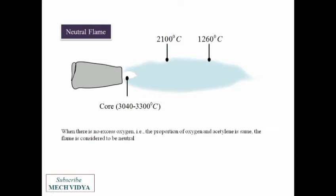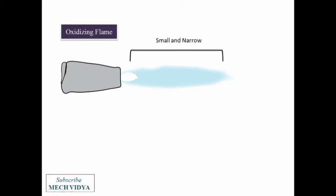Next, if the percentage of oxygen is more than acetylene, the flame becomes small and narrow. This type of flame is also called an oxidizing flame. These are harmful for welding of steels as the risk of oxidation is very high. These are mainly used for welding of copper or copper-based alloys.